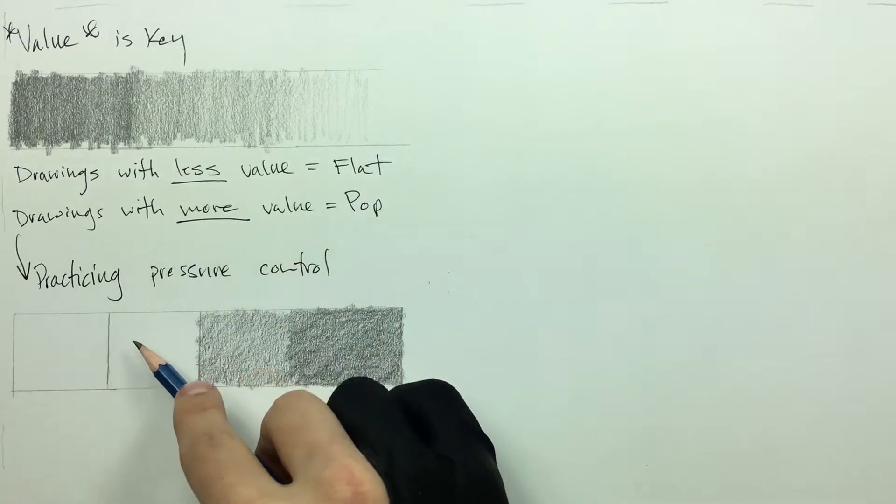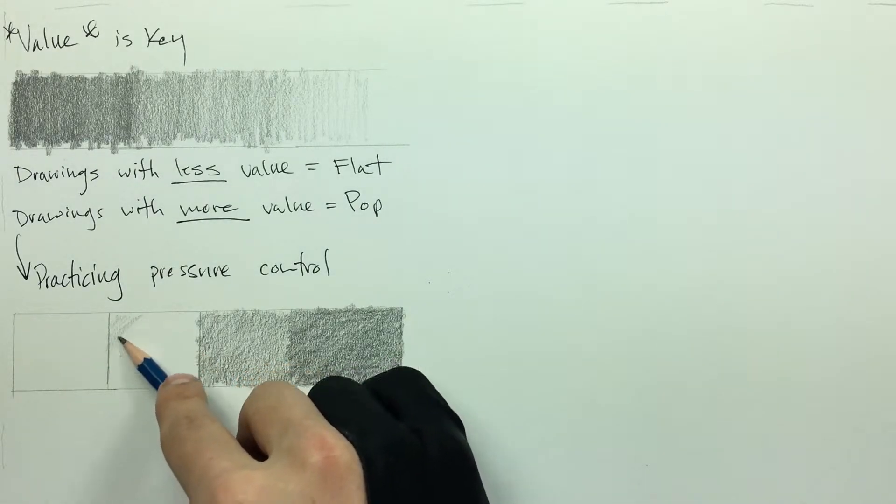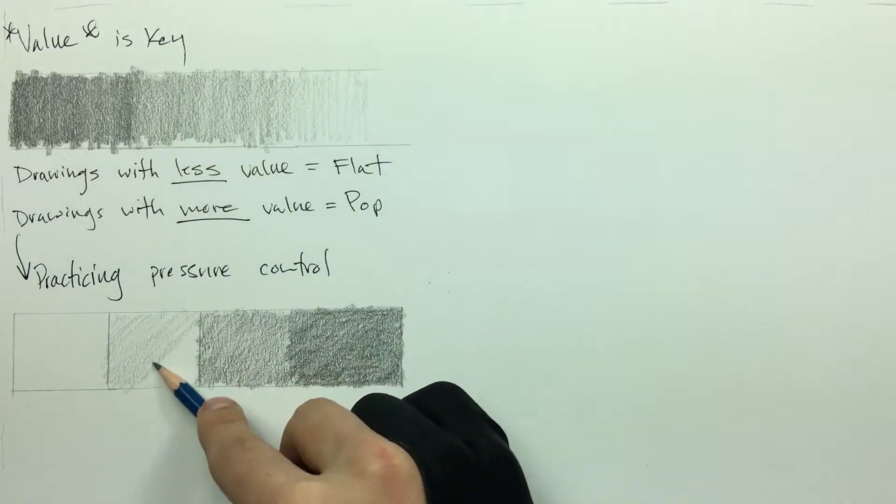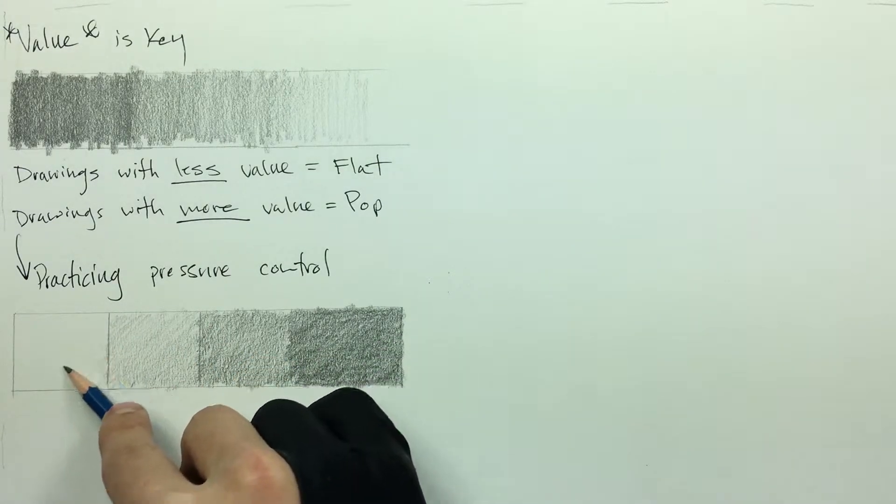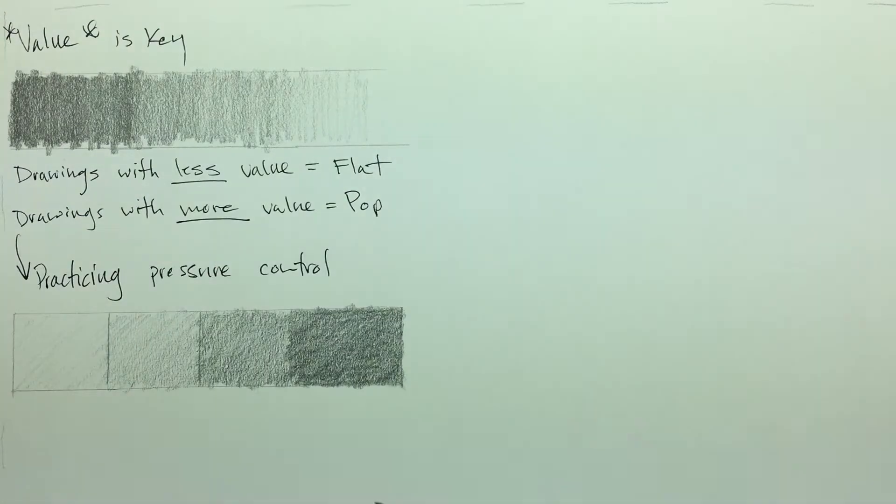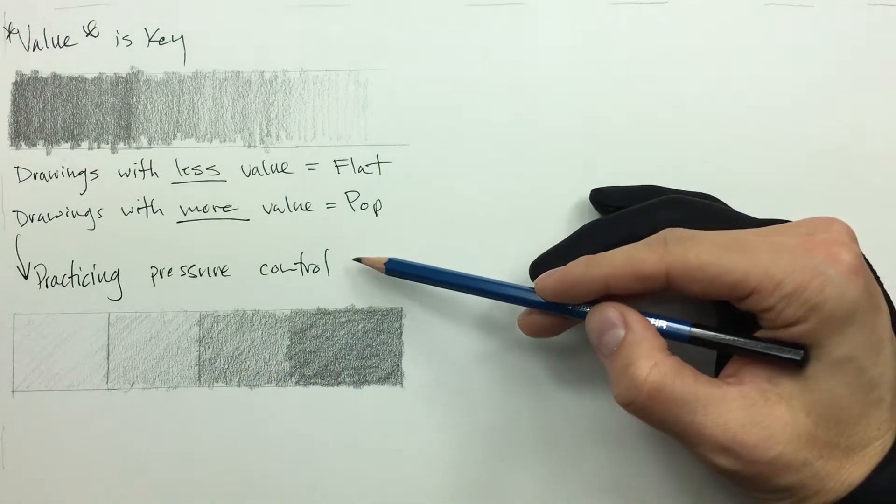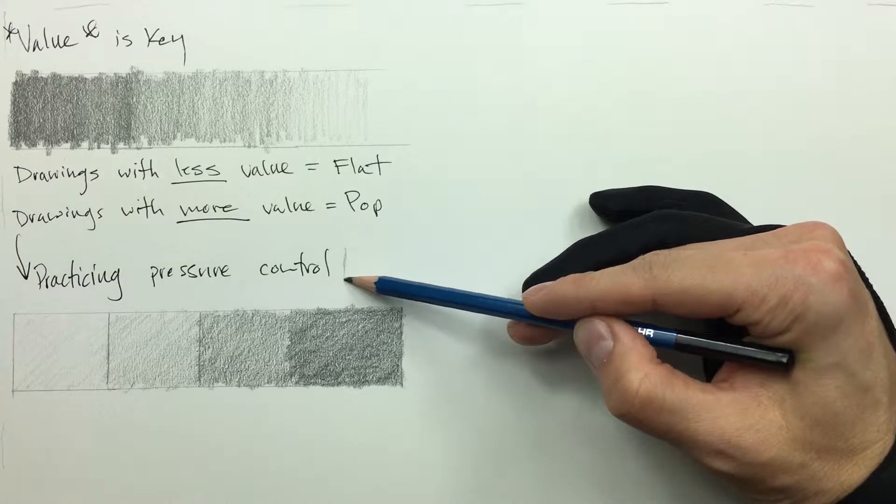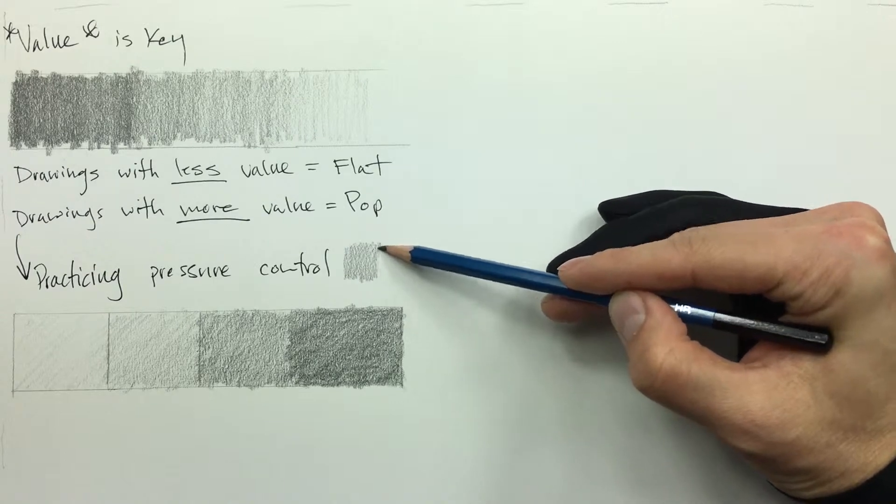This is really good for you as a beginning artist because every single drawing that you draw will have certain variances of values in them. So this is a perfect way to practice and develop that muscle memory and develop your own skills. This is what you want—you want your lines to flow together evenly.